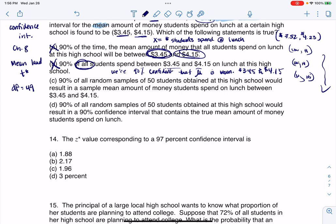Option C says 90% of all random samples of 50 students obtained at this high school would result in a sample mean amount of money students spend on lunch. No, again, I'm going to say that if you repeated this, 90% of the time our intervals would contain the parameter, but we're not always going to have this $3.45 and $4.15 thing. And for the sample mean, we're always just going to calculate that. We don't have to guess that either each time out. We're always trying to figure out where the parameter is going to be.